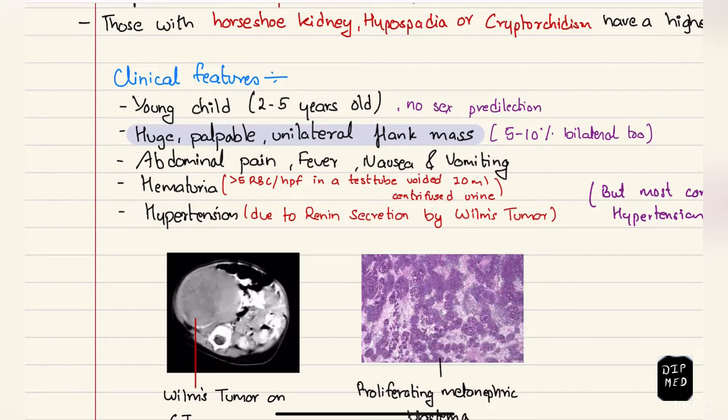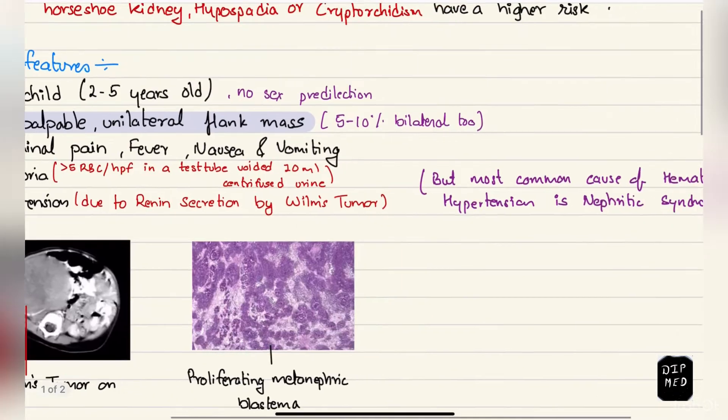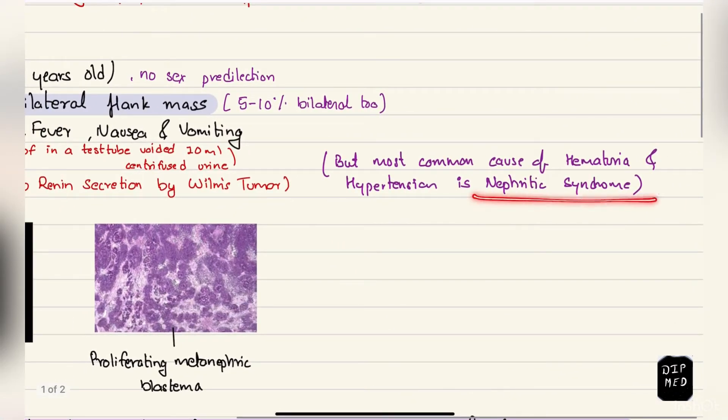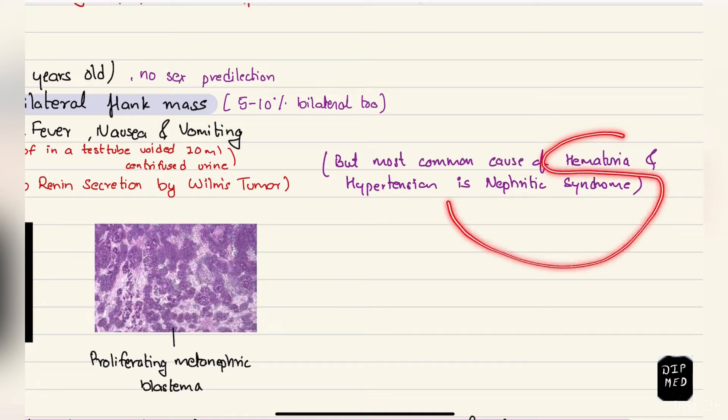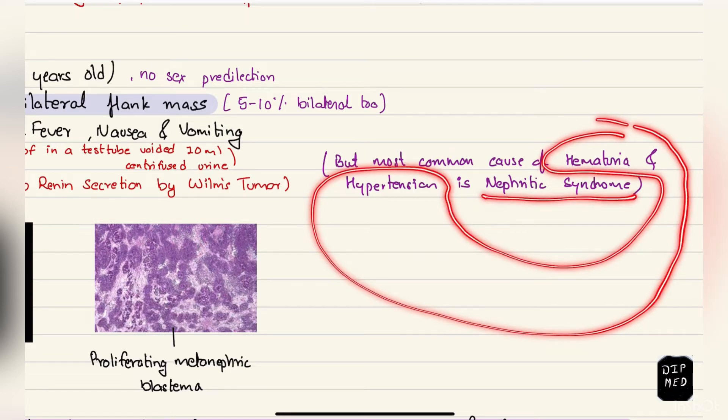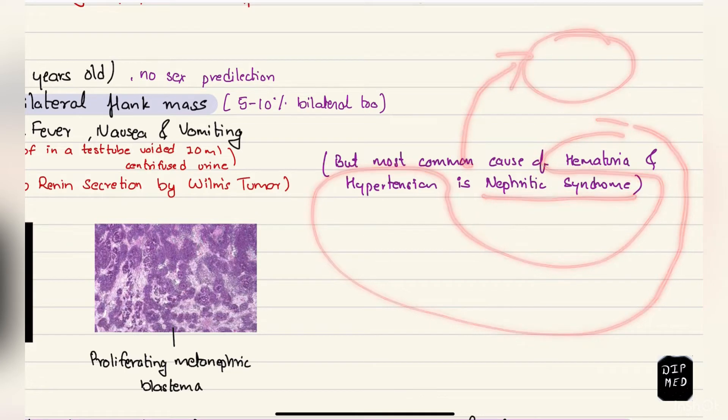They can also present with hypertension due to renin secretion by Wilms tumor. Although patients with Wilms tumor present with hematuria and hypertension, the most common cause of hematuria and hypertension in children is nephritic syndrome. If a child presents with hematuria and hypertension only, suspect nephritic syndrome, but if they also have an abdominal mass, it could be Wilms tumor.